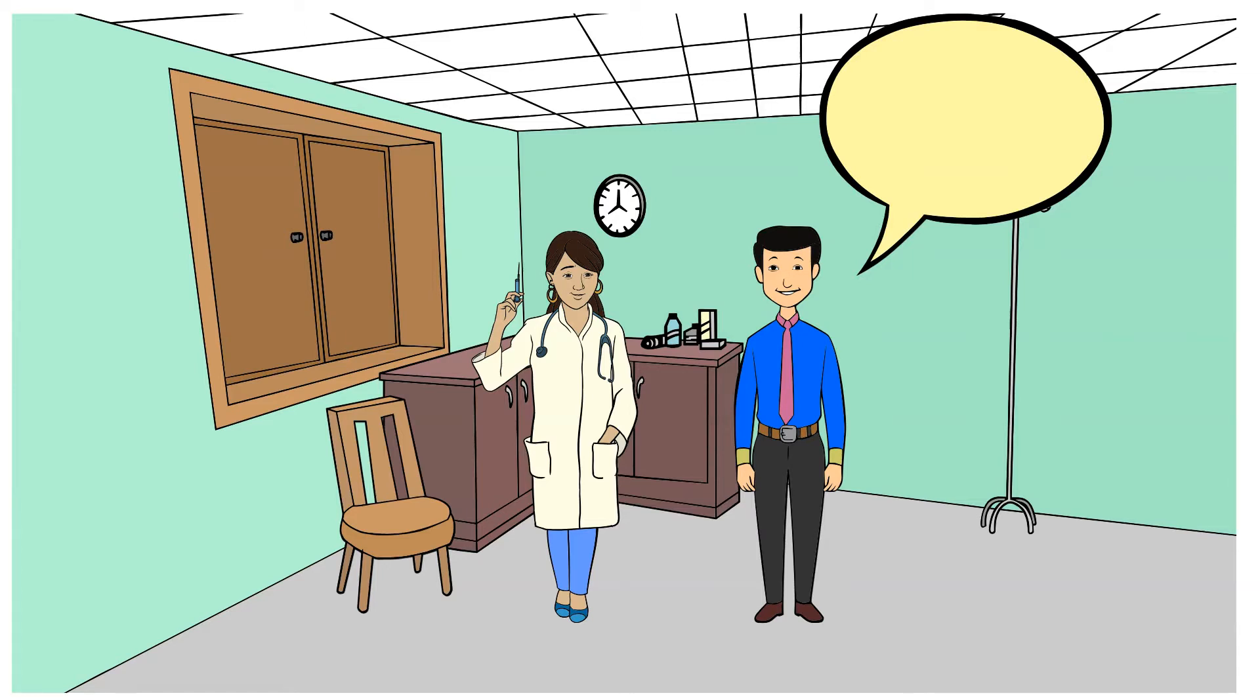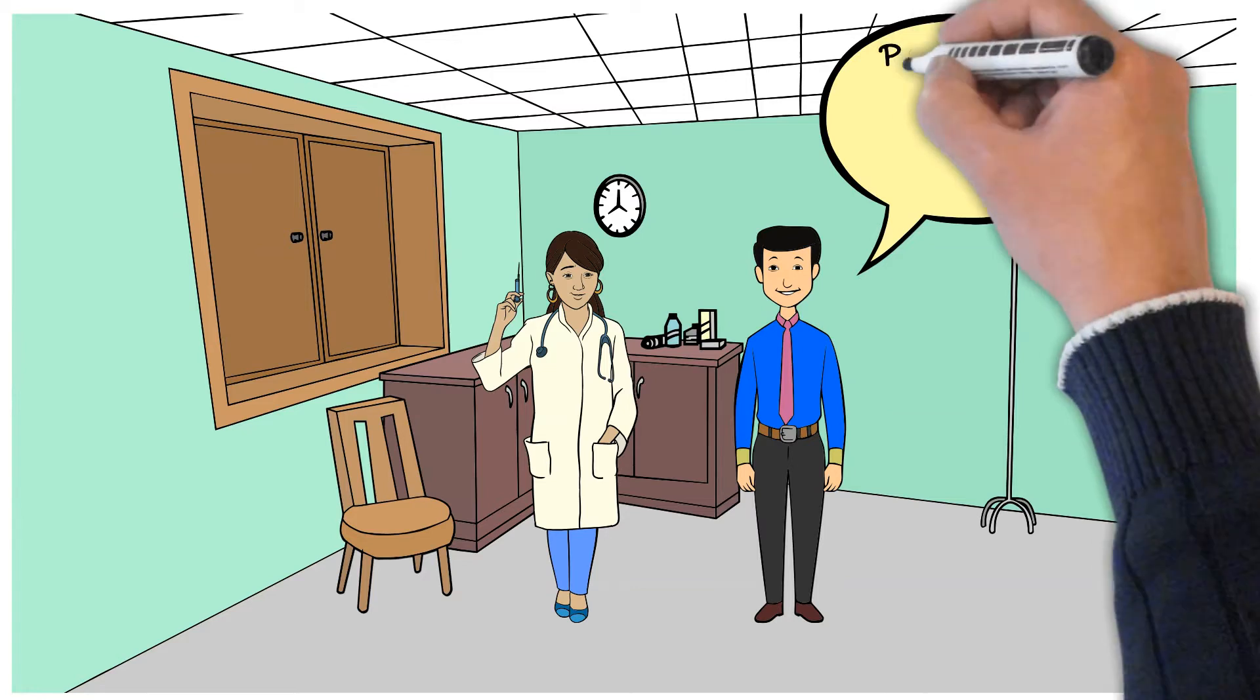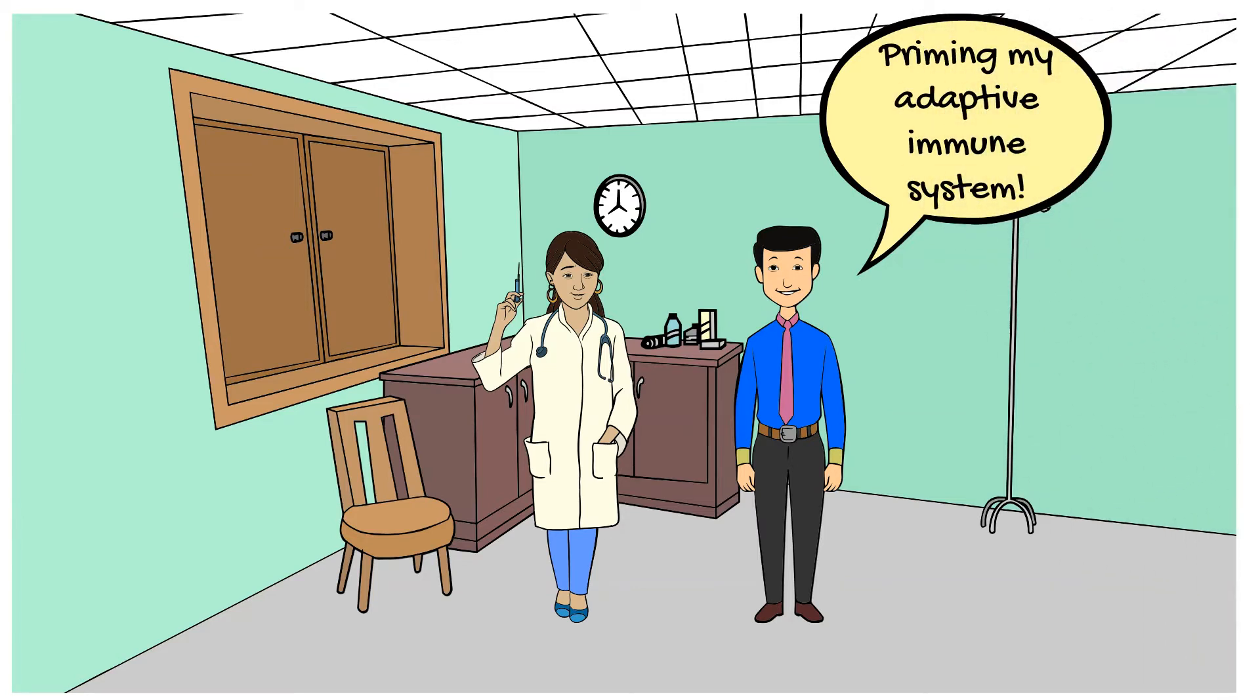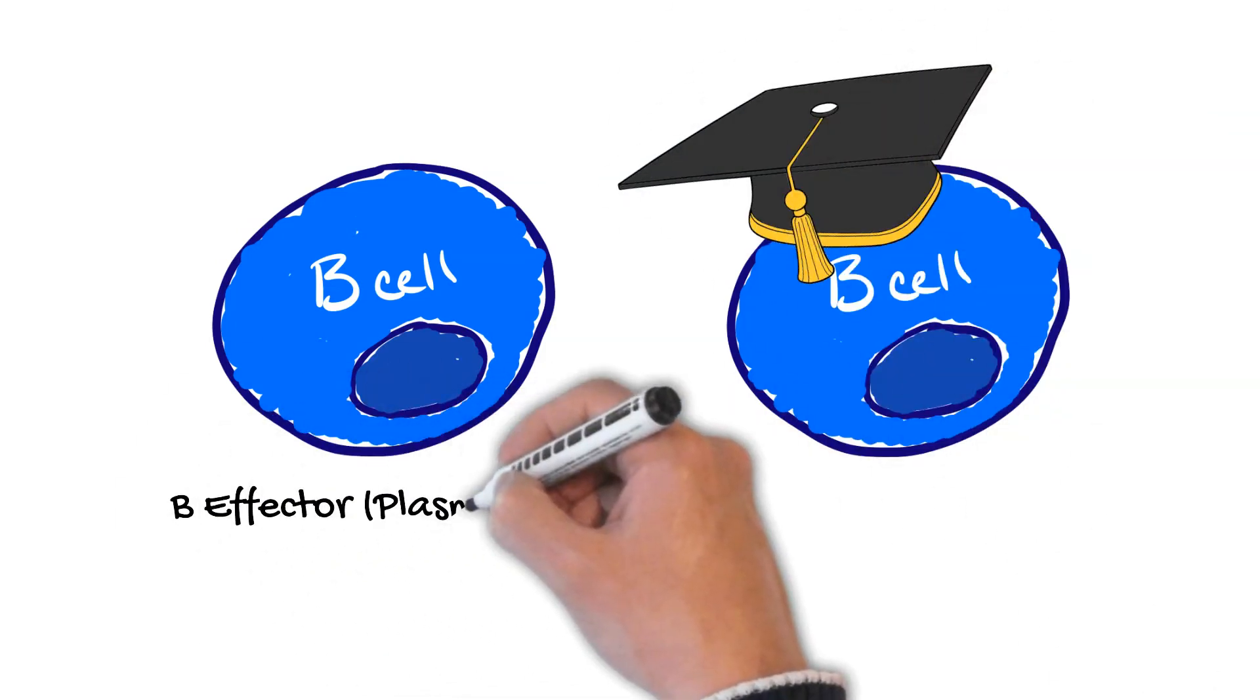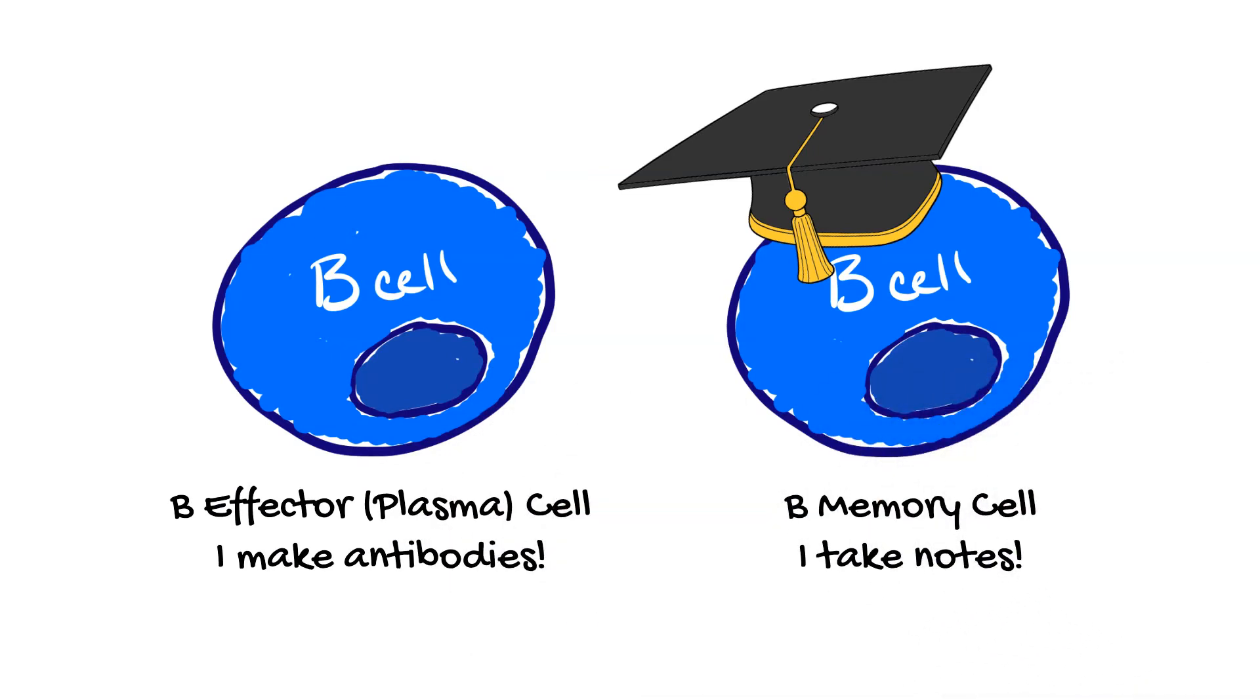As you know from our immunology introduction video, the adaptive immune system will become primed with the introduction of the spike protein. The B lymphocytes will create antibodies that will recognize and bind those non-self proteins that we will in fact be making ourselves. And the B memory cells will take notes so that they can be ready for secondary exposures in the future.